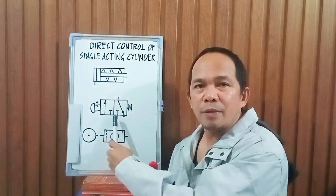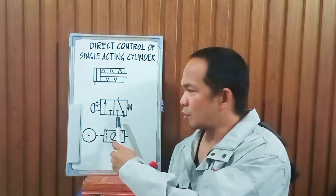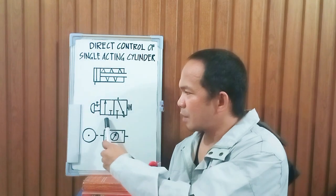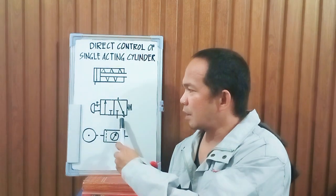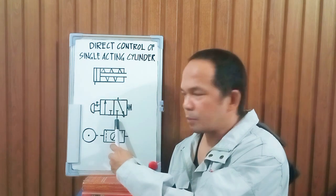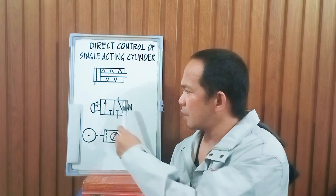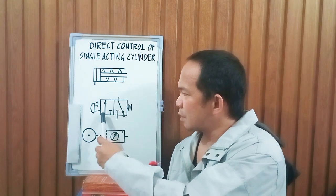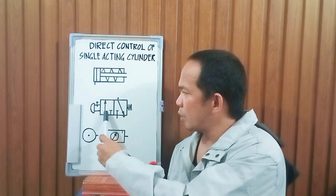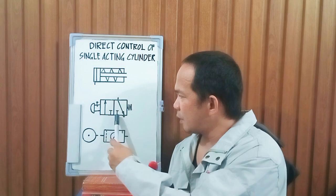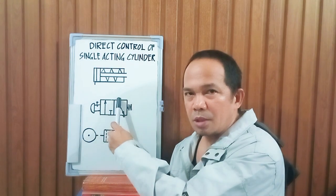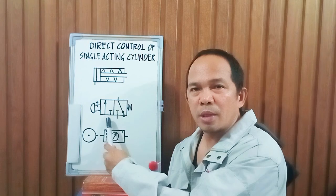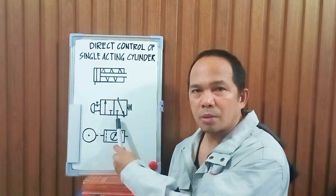Next, we have here the 2/2-way valve, normally closed. Why 2/2-way valve? It has two squares — the squares represent the number of positions. Since it has two squares, it represents two positions. This is the first square and it has an input port, an exhaust port, and an output port. It is spring return. This is normally closed because the input is closed at the moment. If the second square — meaning the next position — is actuated, this square will switch over to the next square, and the air from the input will pass through to the output. It is push-button actuated with a notch — it has a lock. So this is your 2/2-way valve, spring return, normally closed, push-button switch.